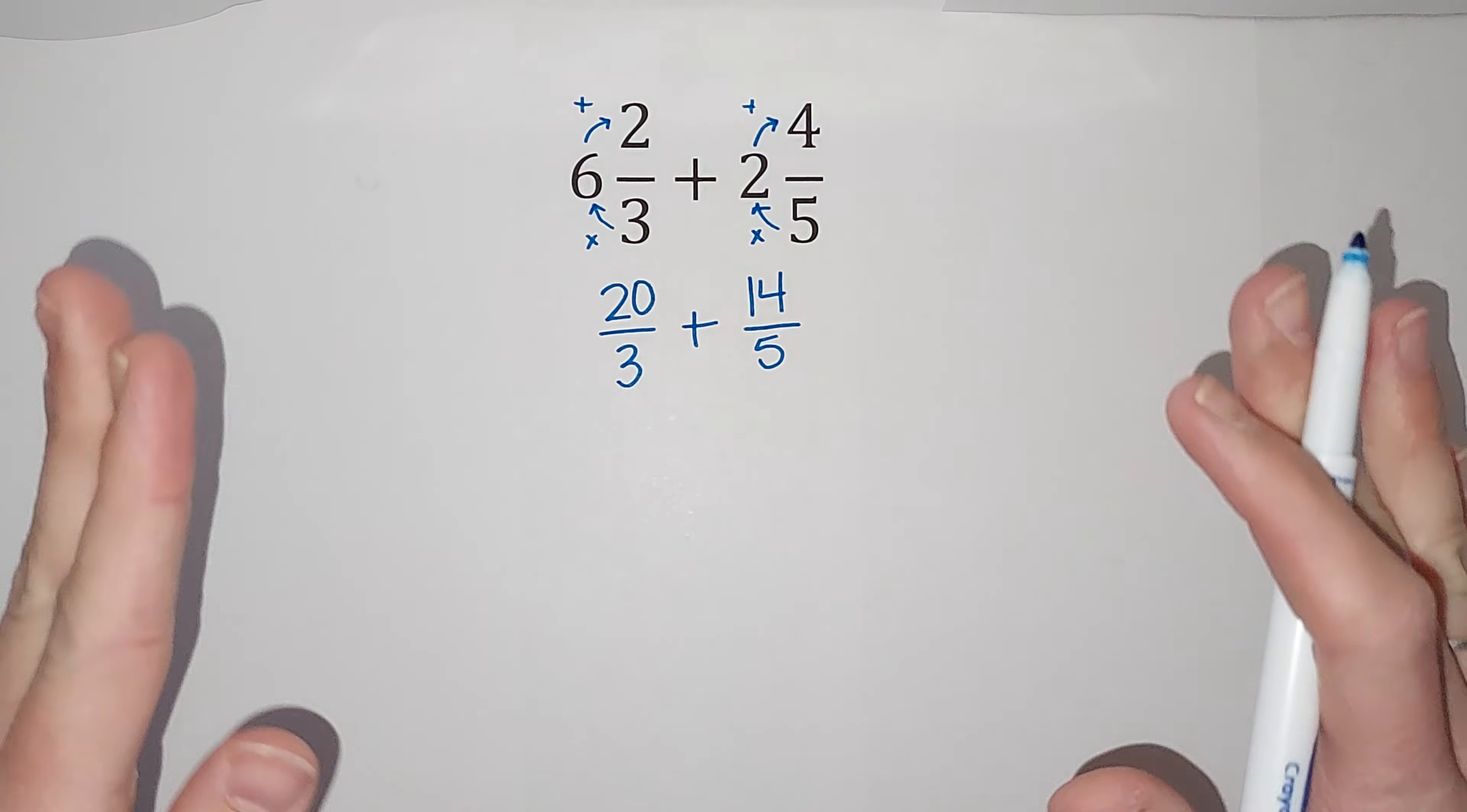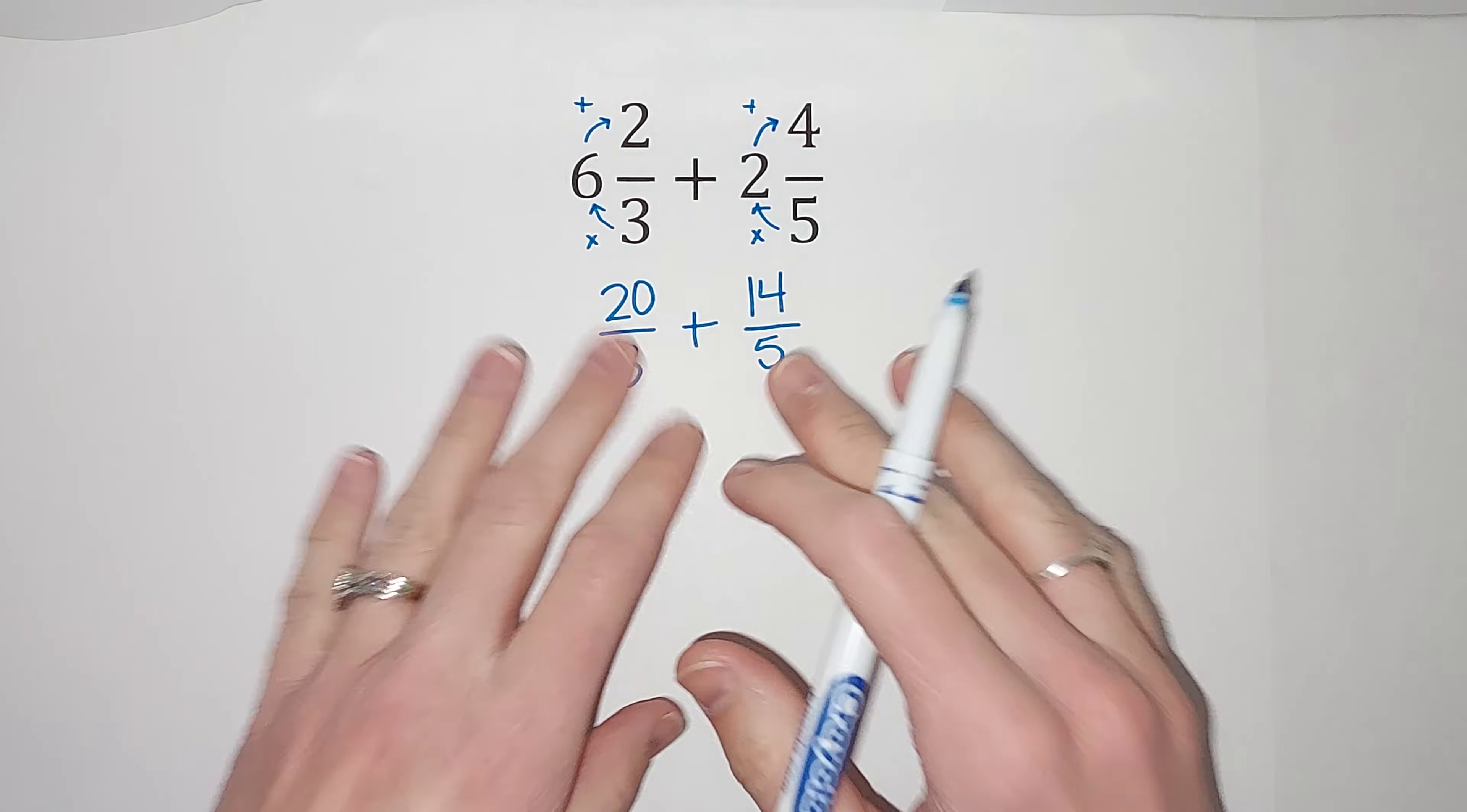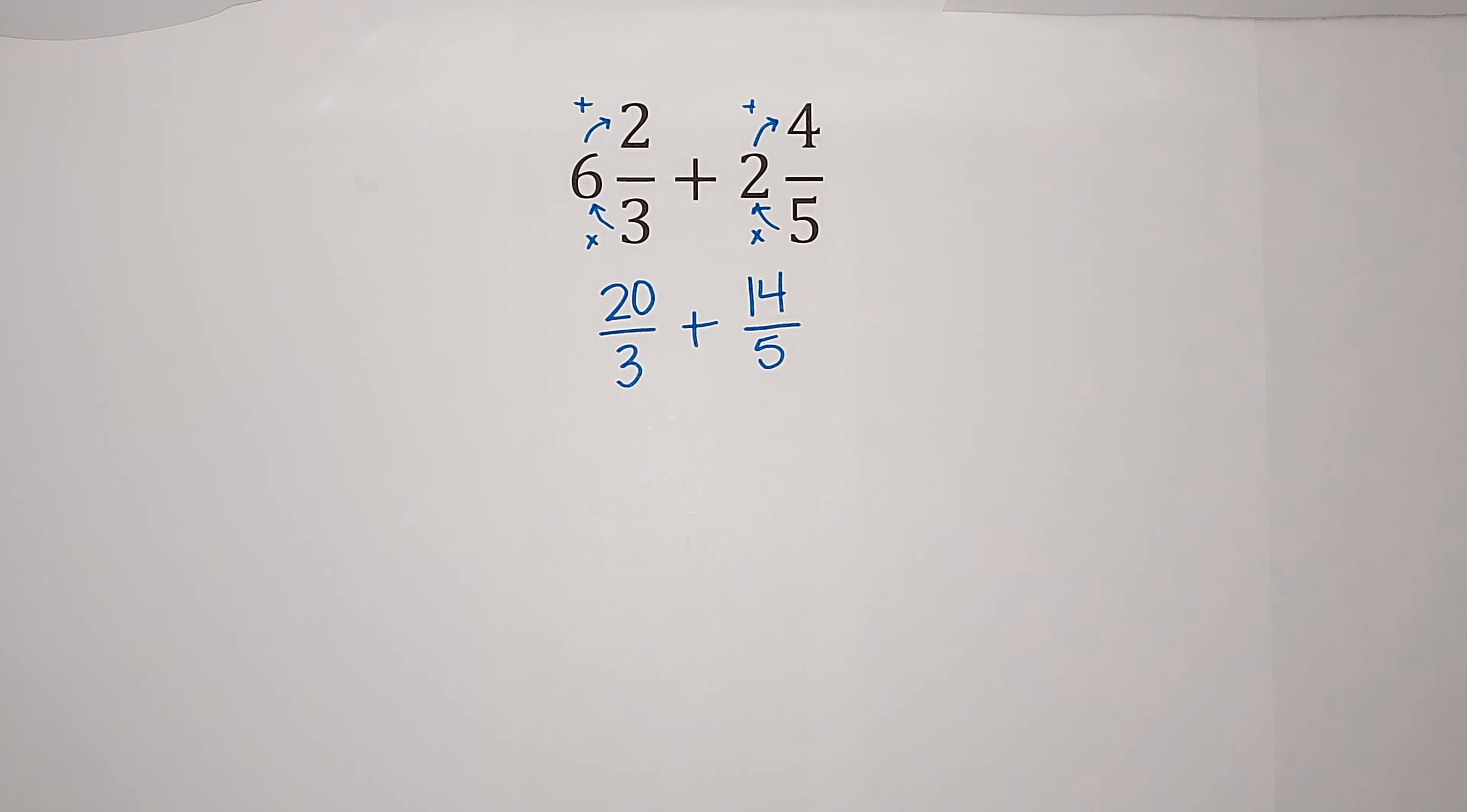Now, the kind of bad news is when we add fractions, the bottoms, the denominators, have to be the same. So we're thinking, what is the smallest number that both three and five go into? Well, it's 15.